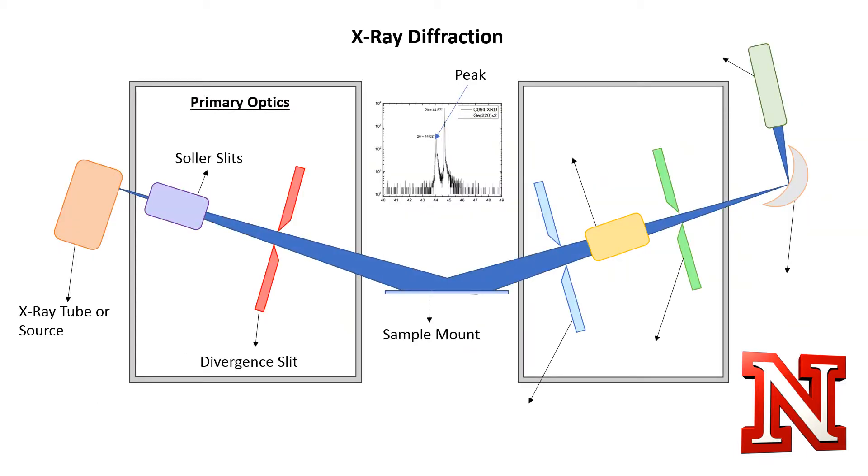The primary optics contain solar slits and divergent slits. These allow for better resolution of angles, so we can see the film more precisely. This allows us to see narrower peaks if they exist in the film, but do not cause narrow peaks. We want narrow peaks because that means there is a high concentration of atoms with the same spacing.